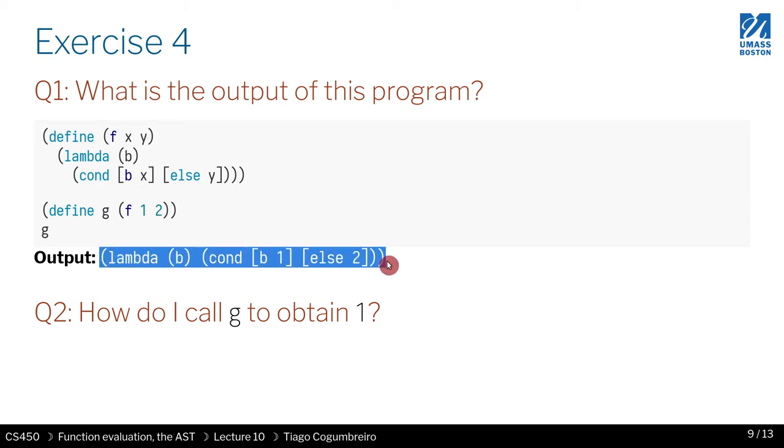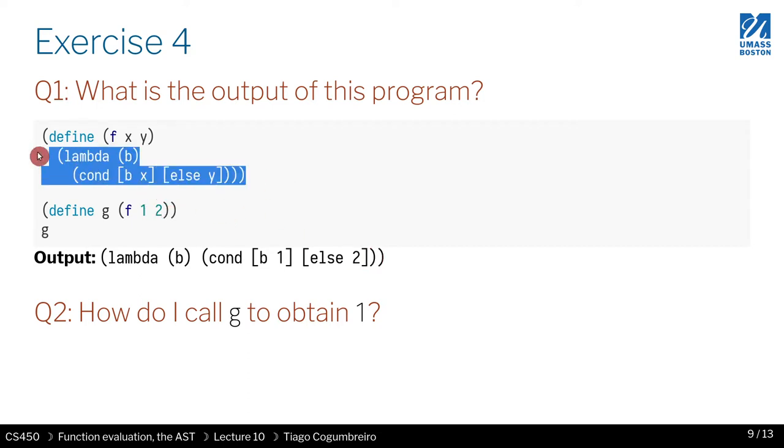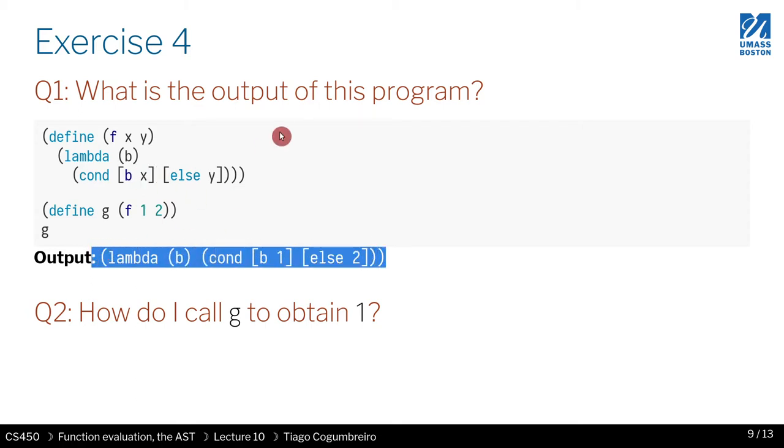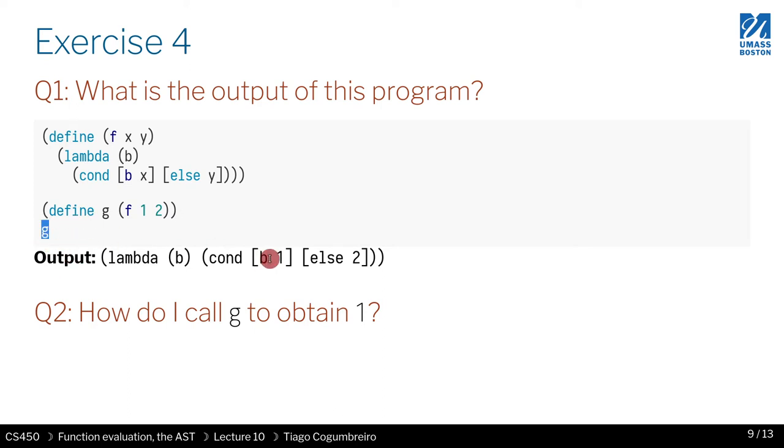The result is this lambda right here, where we replace x by one and y by two. In fact, if you look closely, this is exactly the example of cons, how to implement cons with functions alone and no data structures. How do we get x from this function, is the second question. If I were to call, how do I obtain one?